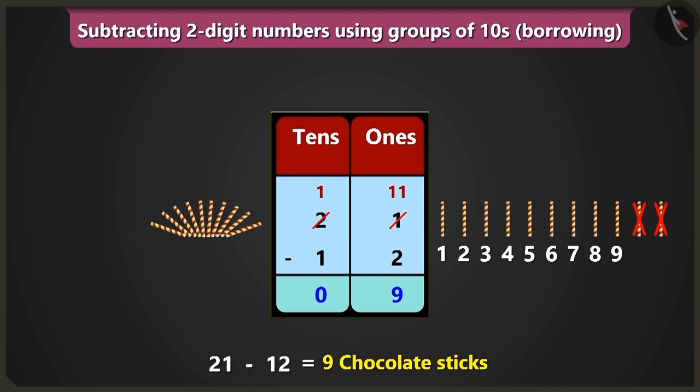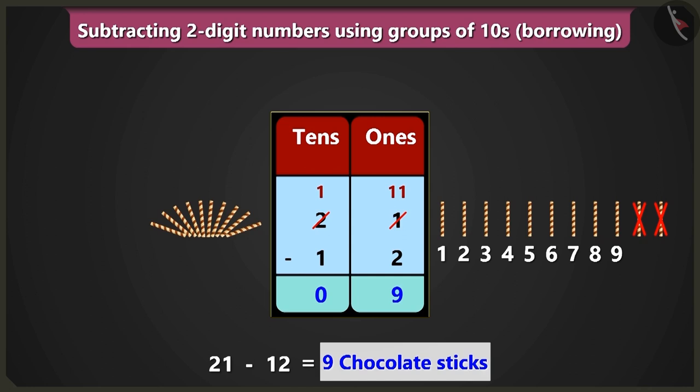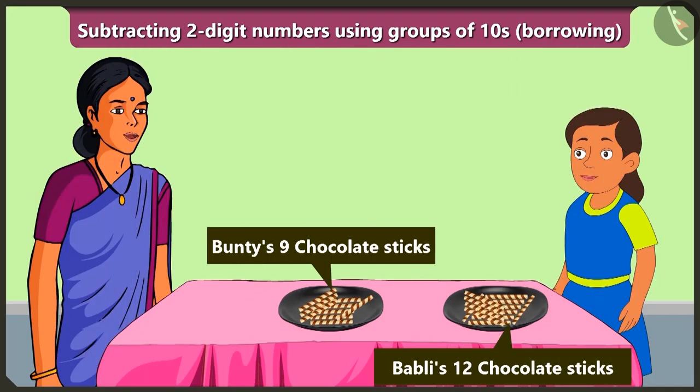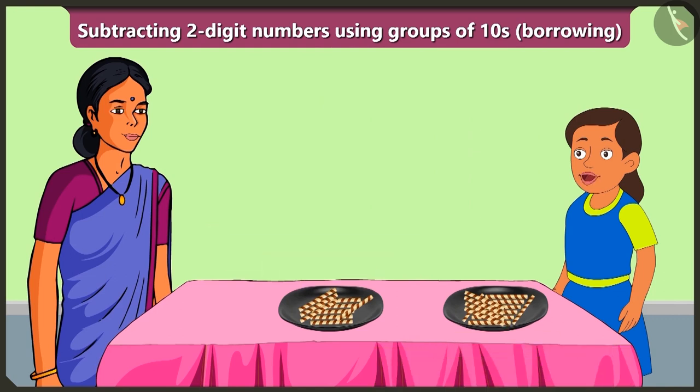So Bunty would have nine chocolates in his share. Well done Bubbly, you gave the right answer. You take your chocolate sticks and study. I will come to you shortly. Okay Mommy.